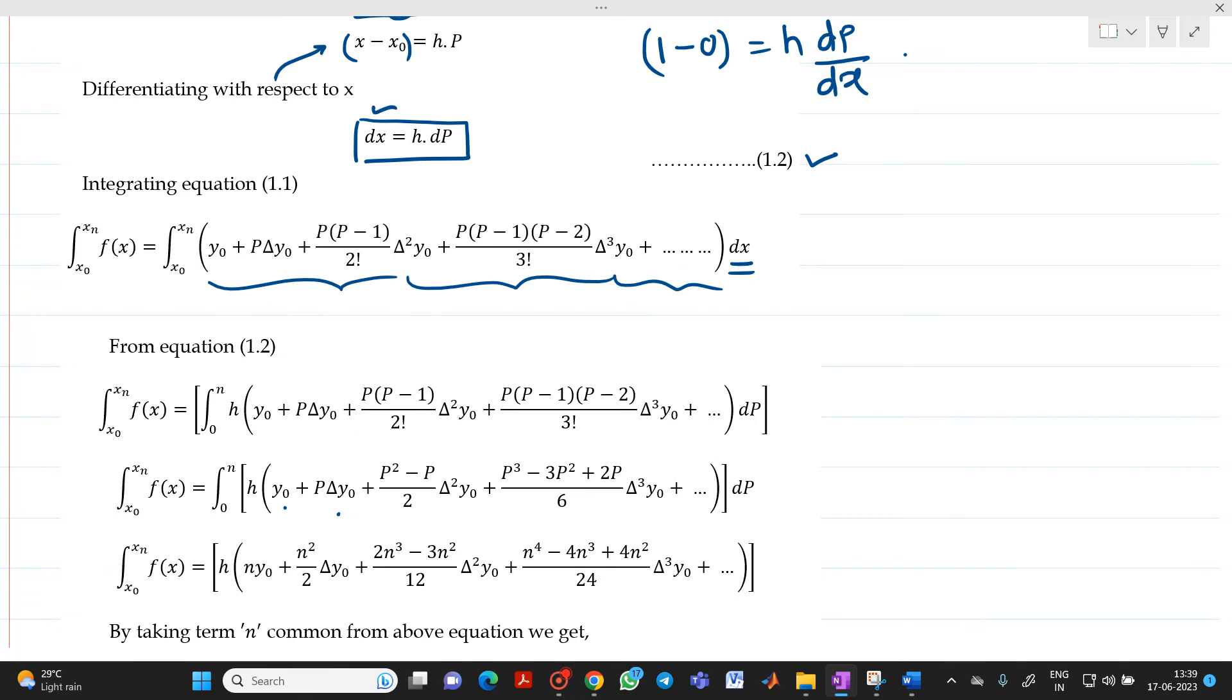What is the value of dx? It is equal to h into dp. If you substitute this, instead of writing from x0 to xn, we have to write from 0 to n. h will be there and there will be a dp because in place of dx, we substituted h into dp.